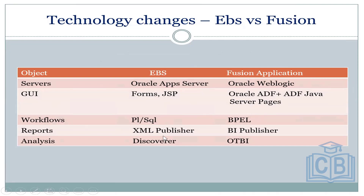In reports for EBS application we have BI Publisher. For analysis, EBS has Discoverer and Fusion applications have OTBI — Oracle Transactional Business Intelligence. This is the way we gather information and generate reports and analysis. That is the difference in technology changes between EBS and Fusion.